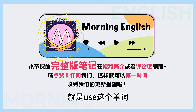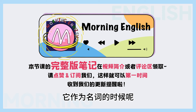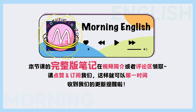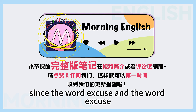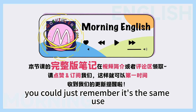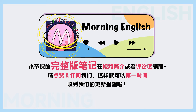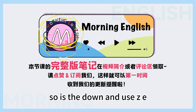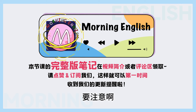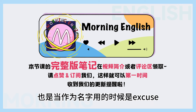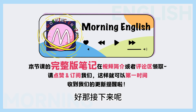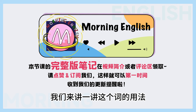我估计有很多同学可能不知道,就是use这个单词。它作为名词的时候呢,发音发成use (yoos)。而作为动词用的时候呢,发成use (yooz)。The same kind of idea: since the word 'excuse' and 'excuse' have the word 'use' and 'use' in them, you can just remember it's the same. U-S-E is the noun, U-Z-E is the verb. 所以呢,大家一定要注意,excuse作为名词用的时候是excuse,作为动词用的时候是excuse。